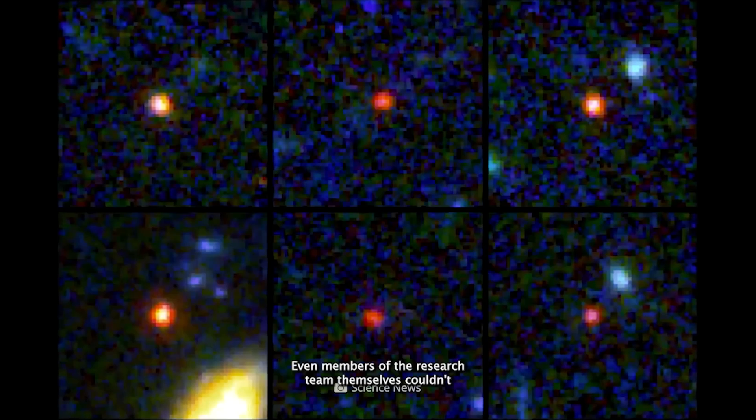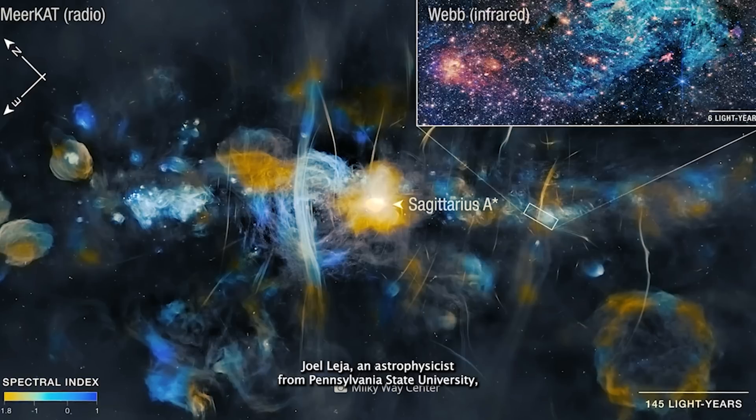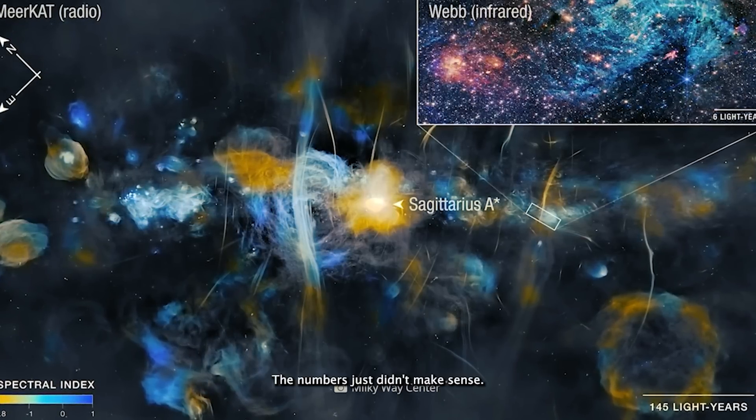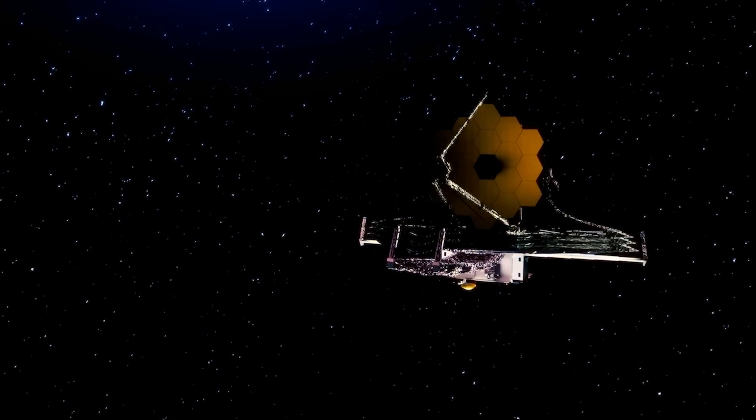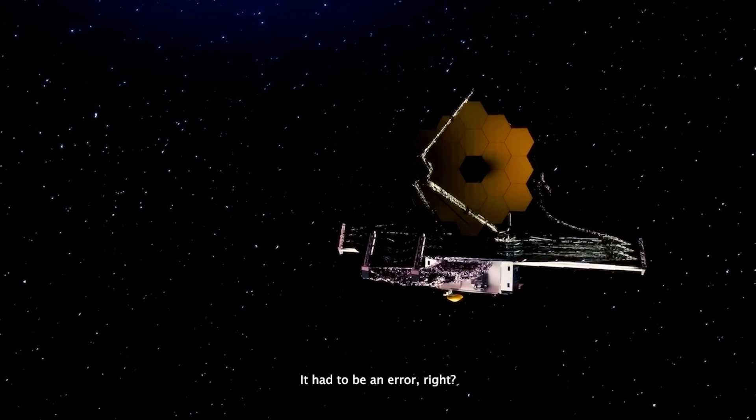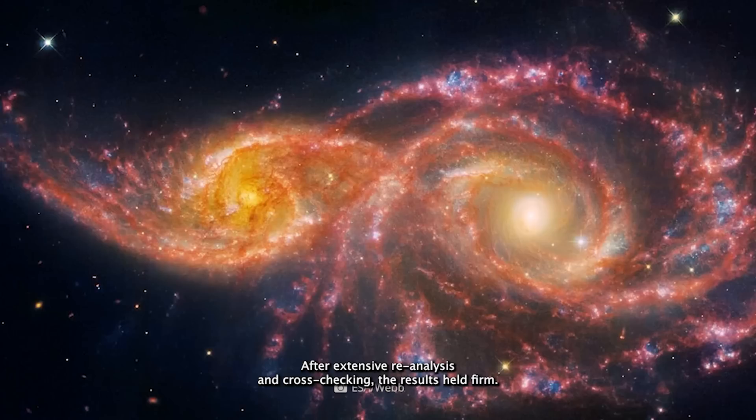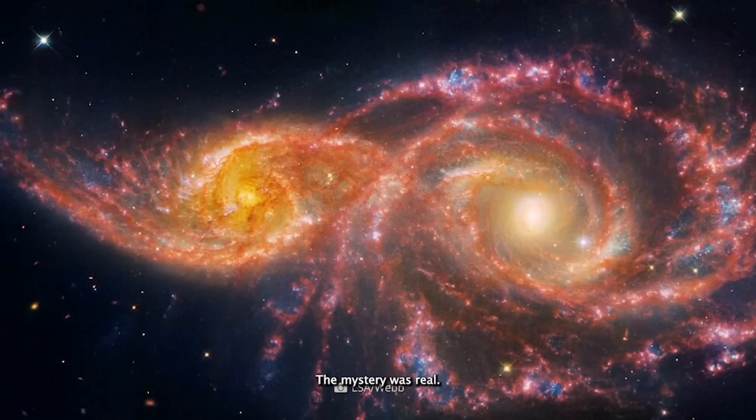Even members of the research team themselves couldn't believe what they were seeing. Joel Leia, an astrophysicist from Pennsylvania State University, admitted that when he first saw the data, he thought he'd made a mistake. The numbers just didn't make sense. Galaxies of this size weren't supposed to exist that early. It had to be an error, right? But it wasn't. After extensive reanalysis and cross-checking, the results held firm. The mystery was real.